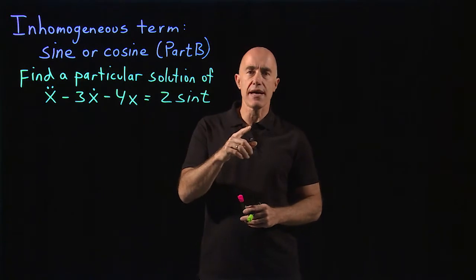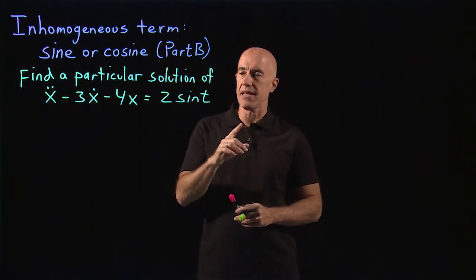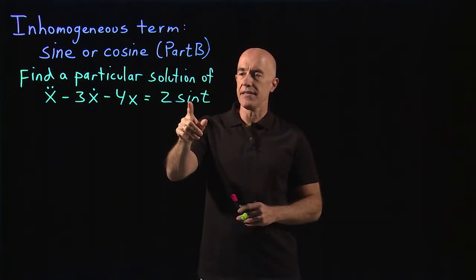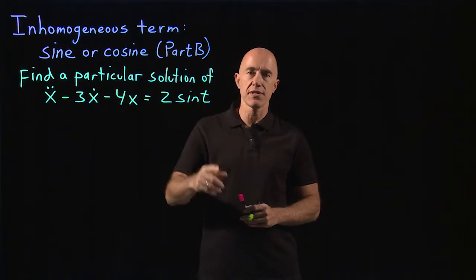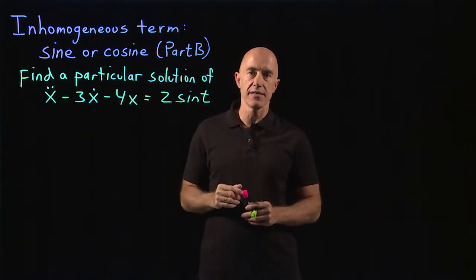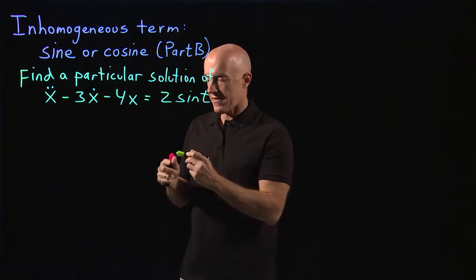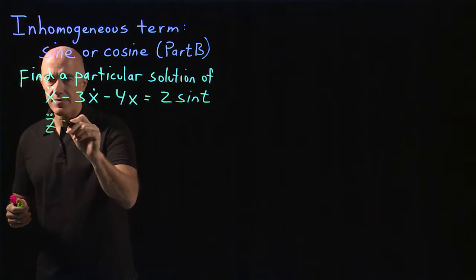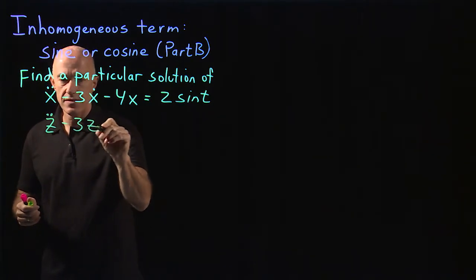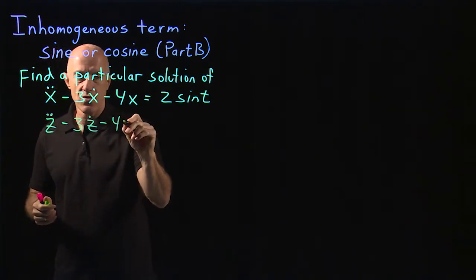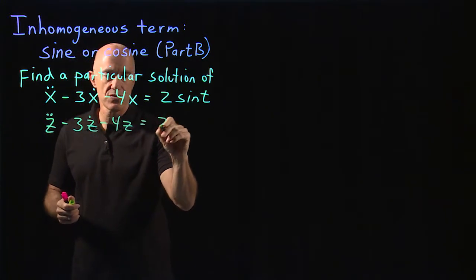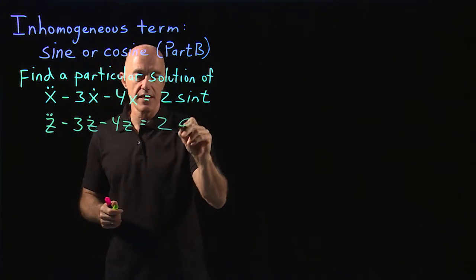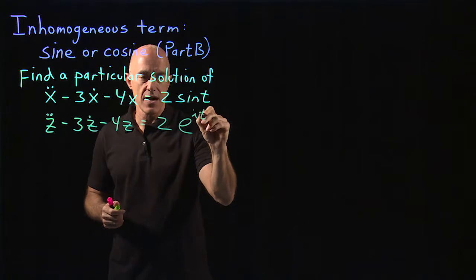We can do that because of the famous identity that e to the it is equal to cosine t plus i sine t. So we write the complex differential equation z double dot minus 3z dot minus 4z equals 2, and instead of sine t here, we write e to the it.